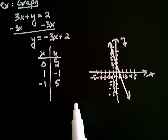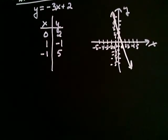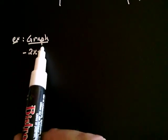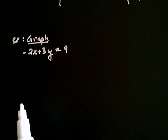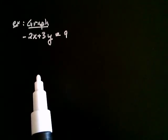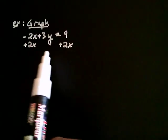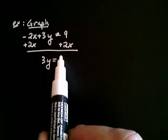That's how you graph a line using a table. Let's take one that's a little more challenging. We'll use the same process, that is we'll isolate y just like we did in this problem. So let's go ahead and graph -2x + 3y = 9. Same idea—we're going to start off by isolating our y. To do that, I'm going to add 2x to both sides. And I've got 3y = 2x + 9.